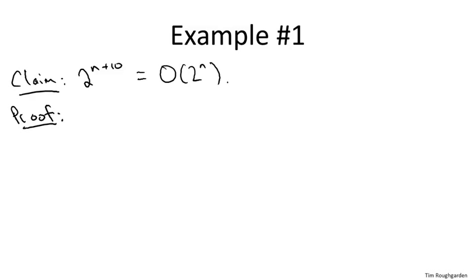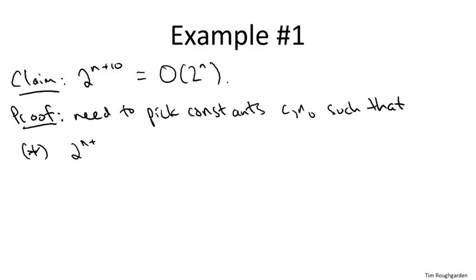Let's go back to the definition of what it means for one function to be big O of another. What we have to prove is we need to show that there exists two constants such that for all sufficiently large n, meaning n bigger than n_0, our left hand side, the function 2^(n+10), is bounded above by the constant multiple c times the function on the right hand side, 2^n. For all sufficiently large n, the function is bounded above by a constant multiple of 2^n.